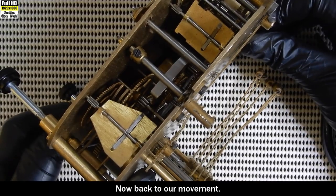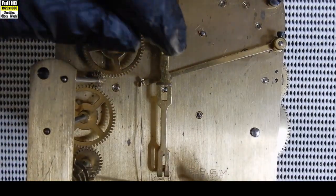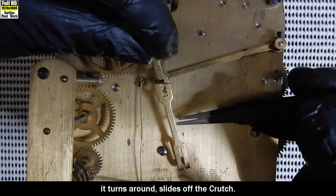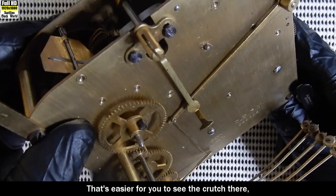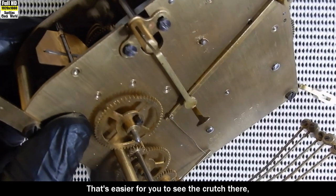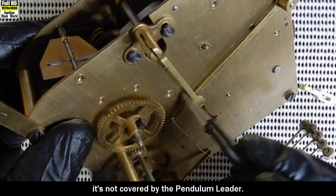Now back to our movement. We'll take the pendulum leader off. It turns around, slides off the crutch. That's easier for you to see the crutch there. It's not covered by the pendulum leader.